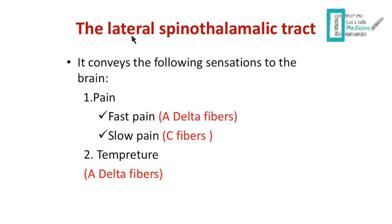Starting with the lateral spinothalamic tract — what does it carry to the brain? It carries pain. We have two types: fast pain and slow pain, depending on the fibers carrying that pain. A-delta fibers are responsible for carrying the fast pain. Its receptors are located on the skin — it's the kind of pain you get when someone slaps you on the face. It's fast and acute, so you feel it almost immediately and can respond. It's sharp and well localized.